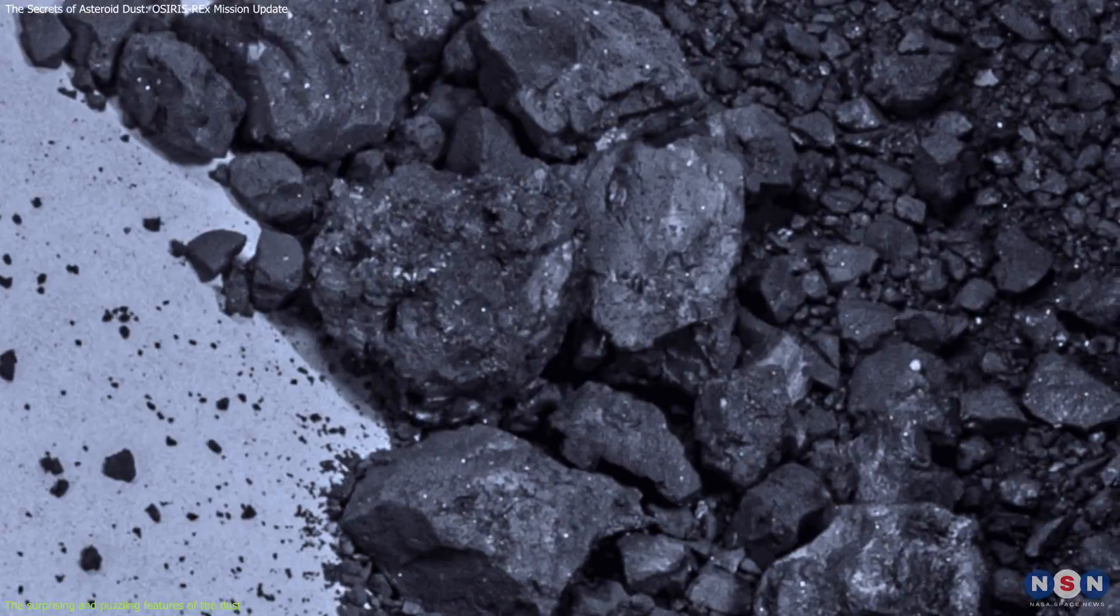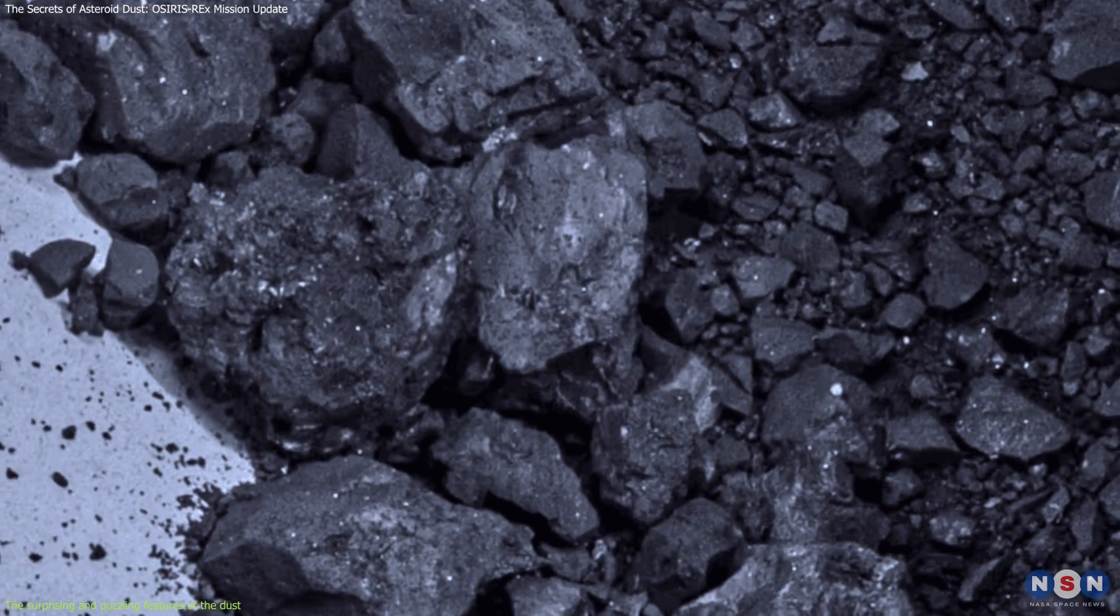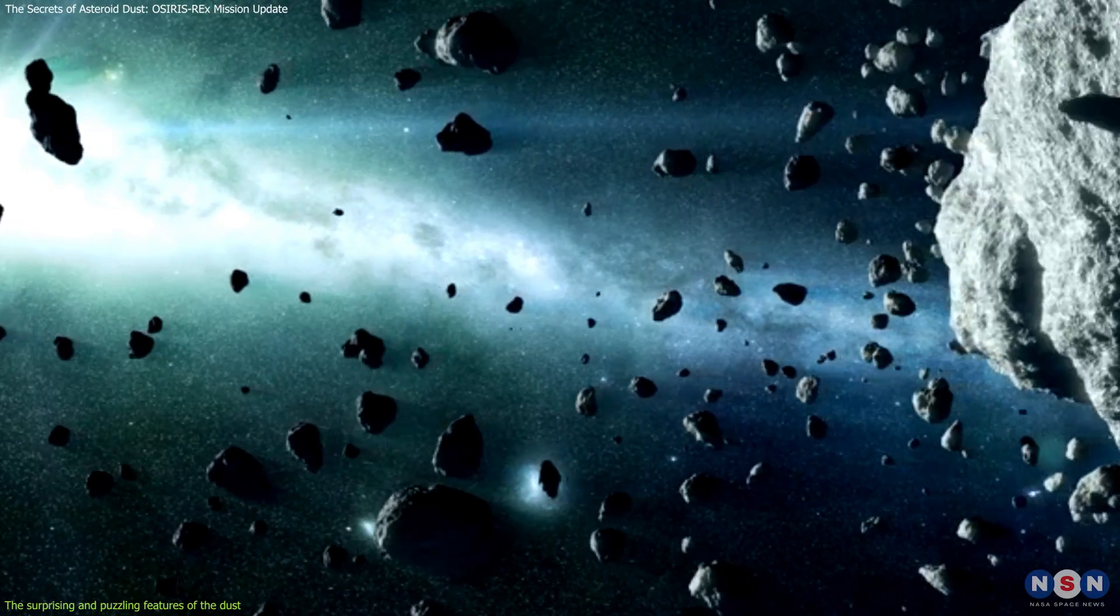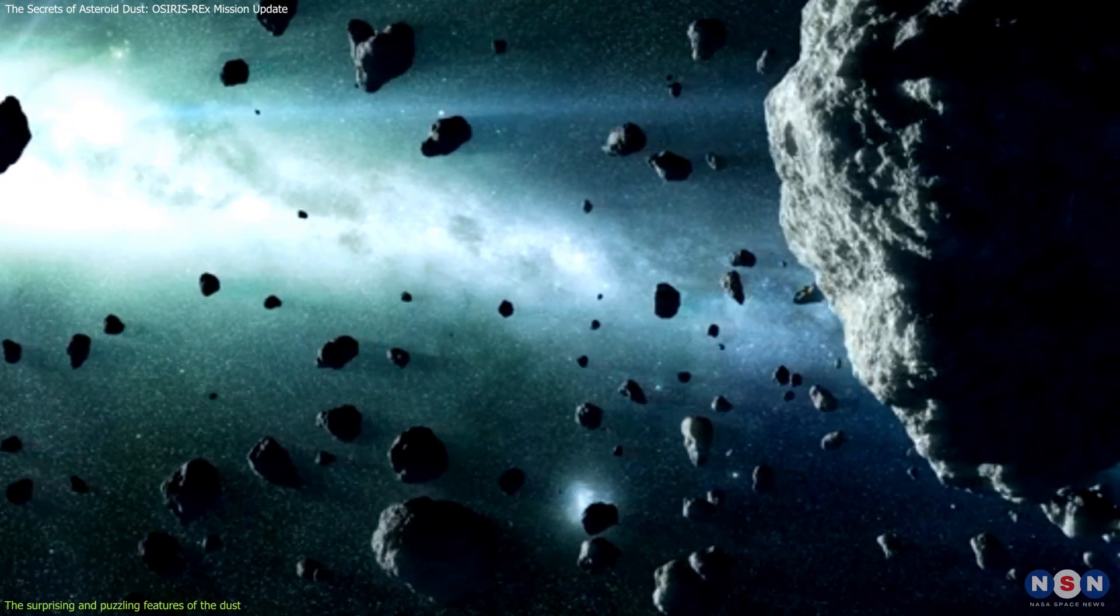For example, the bluish sheen could indicate that the dust has been altered by space weathering, such as exposure to solar radiation and micrometeorites, which could affect its chemical and physical properties.